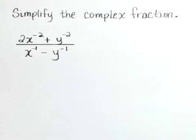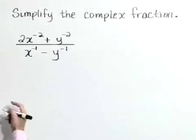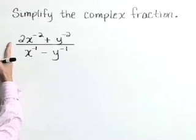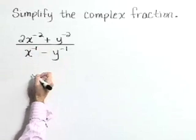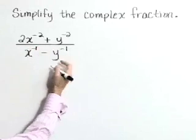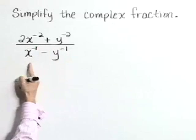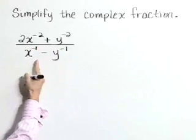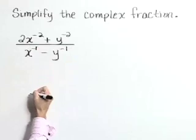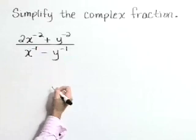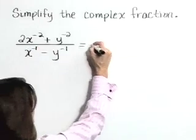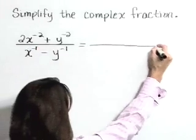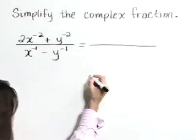Simplify the complex fraction. In the numerator, we have 2 times x to the negative 2 plus y to the negative 2 over, in the denominator, x to the negative 1 minus y to the negative 1. Now, let's start by taking care of those negative exponents.